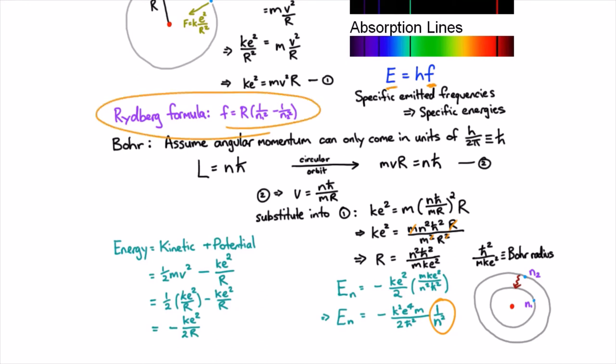Bohr's model worked. It explained why people saw discrete lines in spectra and gave quantitative reasons for why the particular lines were there in terms of fundamental parameters rather than just some experimentally determined constant.